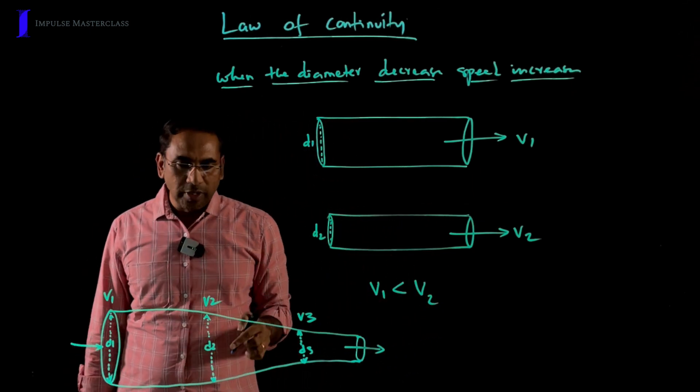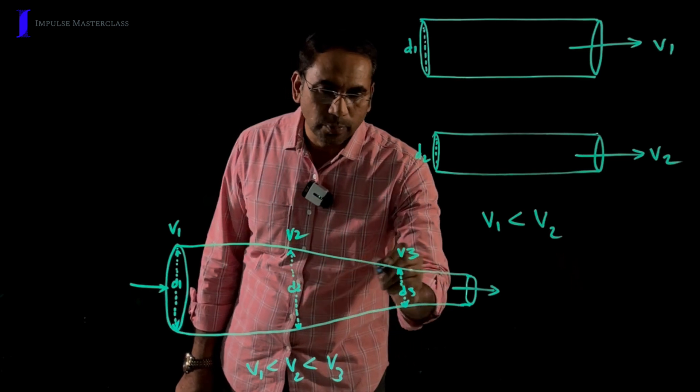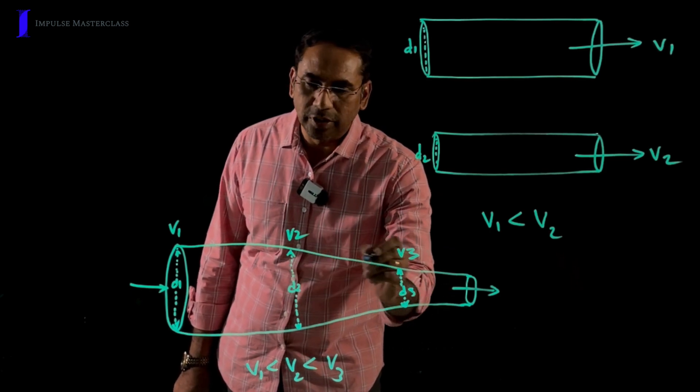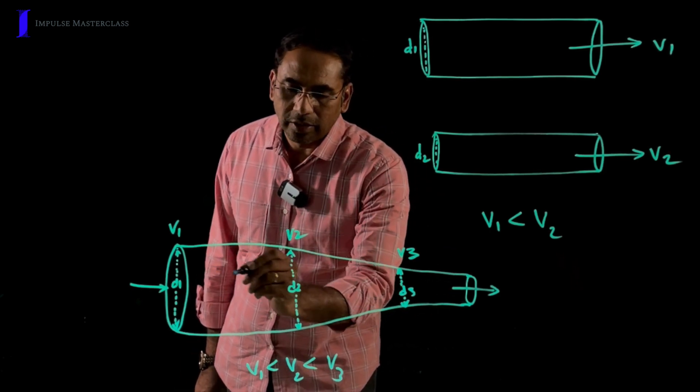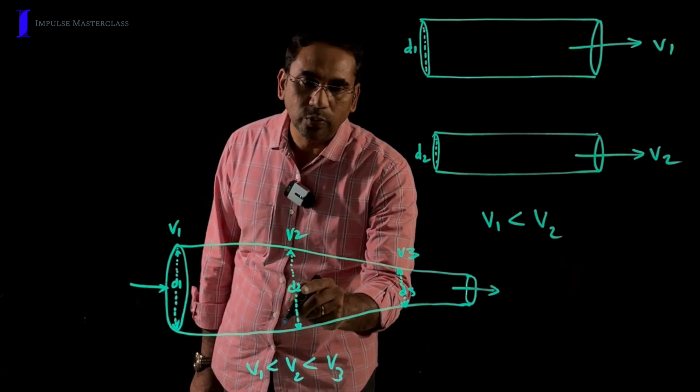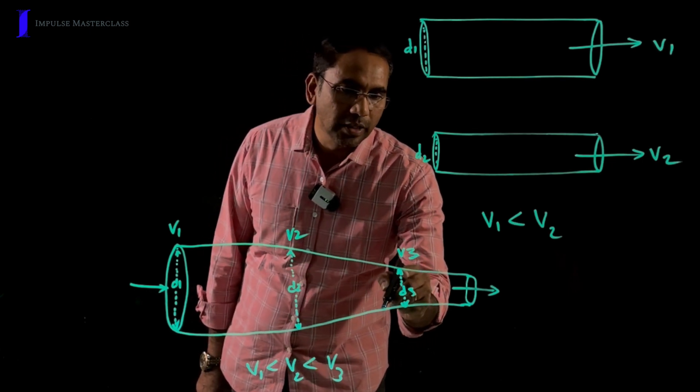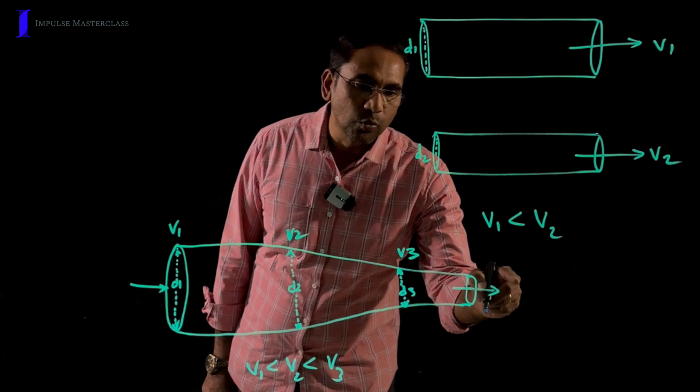In the same way, when water is passing through this pipe, you can find the variation in velocity. Here V1 is less than V2, V2 is less than V3. And finally, the water comes out with great speed.